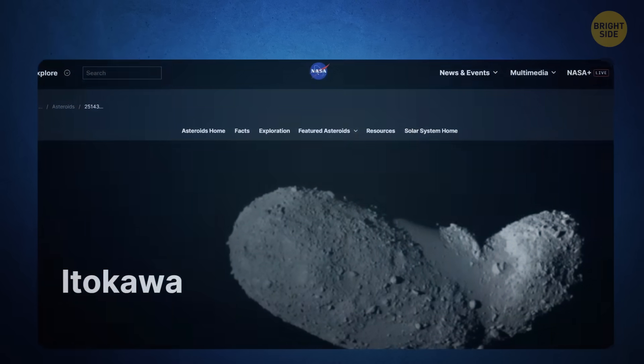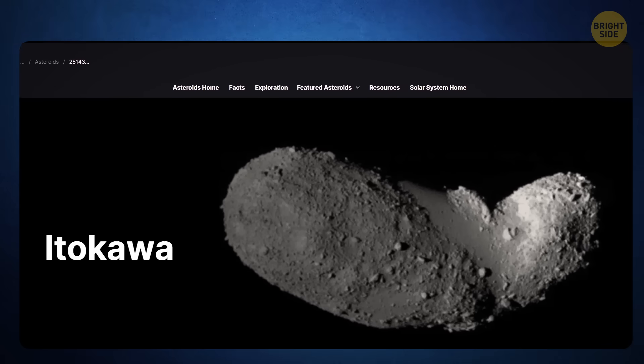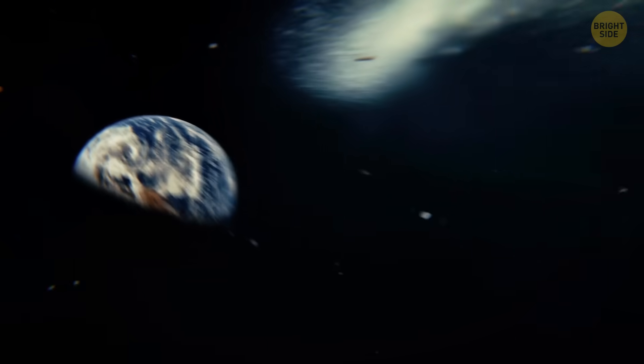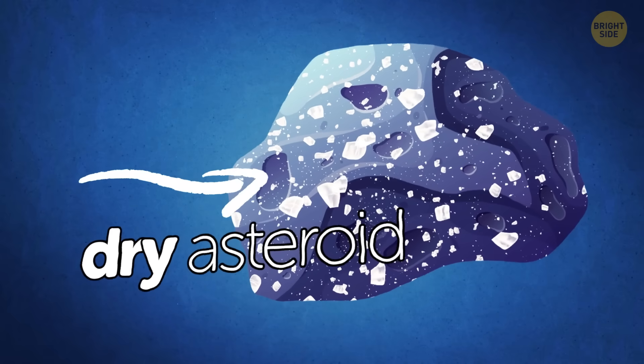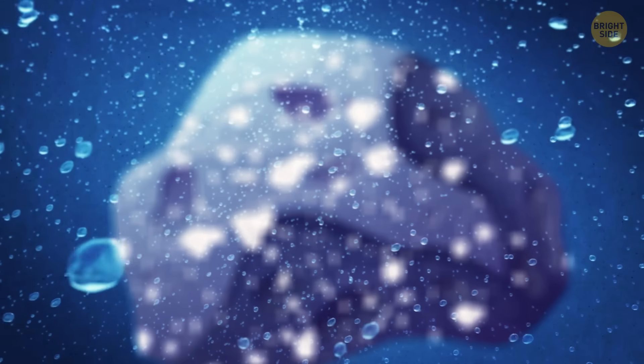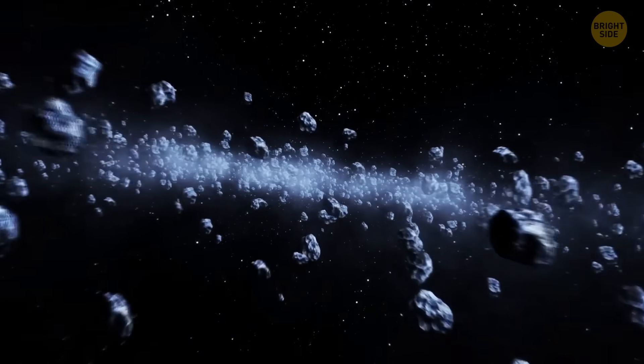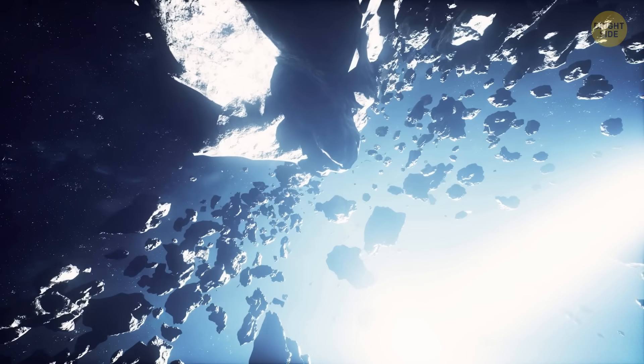The S-type asteroid called Itokawa came back to Earth on a spaceship called Hayabusa. It's shaped like a peanut and hangs out near Earth. It probably broke off from a bigger space object. This type of asteroid is usually thought to be dry, but little salt crystals could only have formed in the presence of liquid water. So this discovery is shaking things up and making us think that there might be more water in asteroids than we thought.